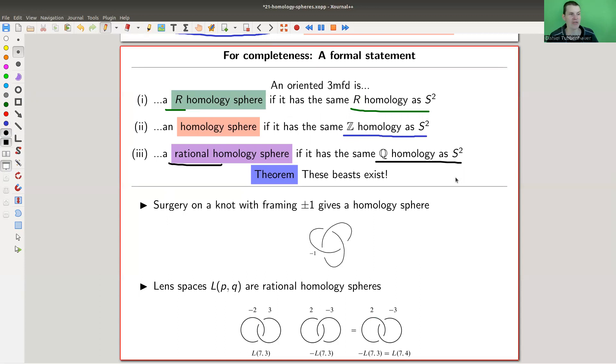So homology spheres exist. So these beasts actually exist. Spaces which don't look so crazy. It's not some crazy three-dimensional space or something. Who knows? No, it's actually a manifold. And those beasts exist, and you have quite a few of them. So we already had the surgery gives the homology sphere, the Poincaré one. This is of this type here.